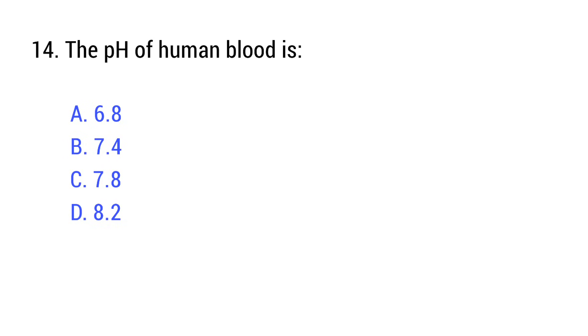Question number 14. The pH of human blood is — the right answer is option B: 7.4.